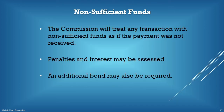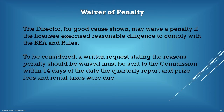Any payment made with non-sufficient funds will be treated as if the payment was not received. A letter will be sent to the organization notifying them of the returned payment with an enclosed current billing statement. The organization must submit a payment for the total liability to resolve the issue. The rule states that if the licensee has failed to timely pay the prize fee due three times within four consecutive quarters and a final jeopardy determination has been made by the commission for three of the four consecutive quarters, the license will be denied or revoked. Additionally, the commission has the regulatory authority to impose an administrative penalty for late payment. The director, for good cause shown, may waive a penalty if the licensee exercised reasonable diligence to comply with the BEA and the rules.